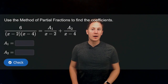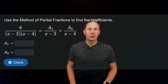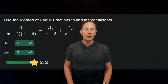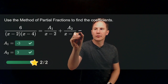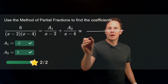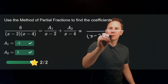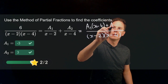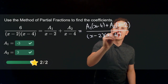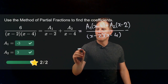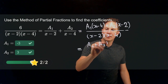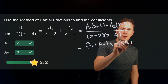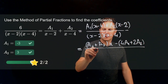Use the method of partial fractions to find the coefficients a1 and a2 so that this relation is valid. The answer is a1 equals negative 3 and a2 equals positive 3. You can find these coefficients by recombining the fractions with common denominator (x minus 2)(x minus 4), and cross-multiplying gives a1 times (x minus 4) plus a2 times (x minus 2) in the numerator.